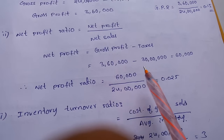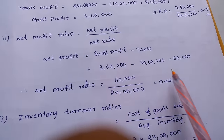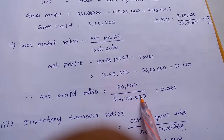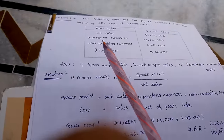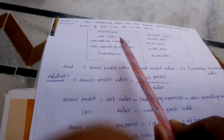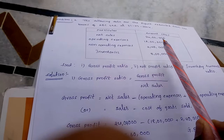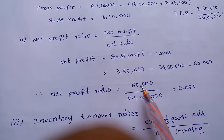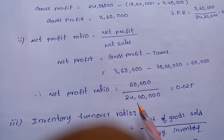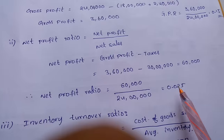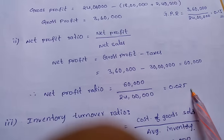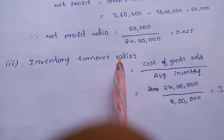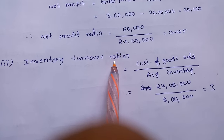The net profit ratio is net profit of 60,000 divided by net sales, which is given in the problem as 24 lakhs. Simplifying 60,000 divided by 24 lakhs, we get 0.025. This is the net profit ratio.